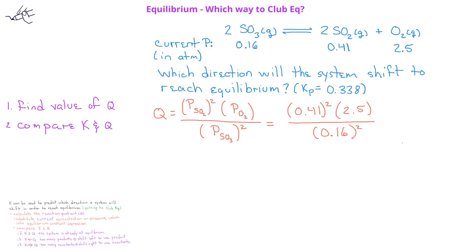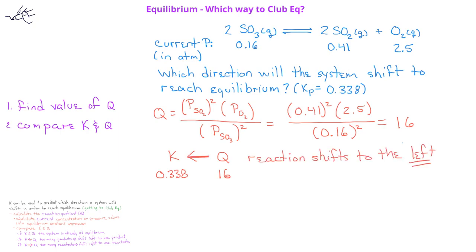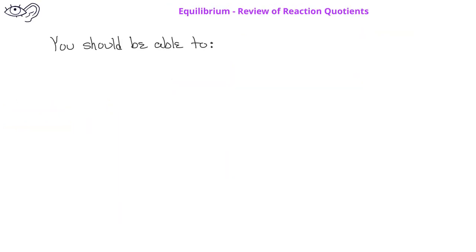When we calculate this on our calculators, we get a reaction quotient of 16. When we compare K and Q, we see that K is less than the value of Q. This means that the reaction moves to the left — in other words, it moves to form more of the reactant SO3.